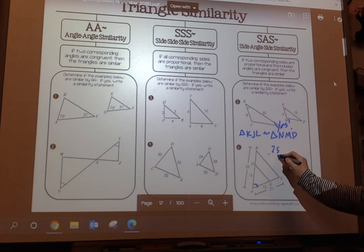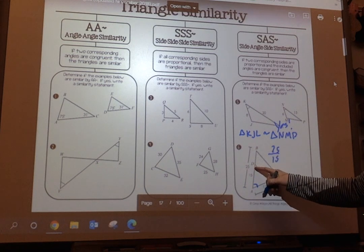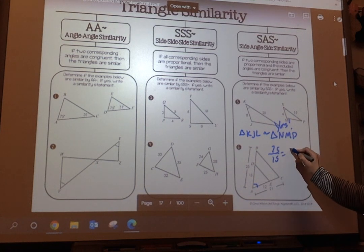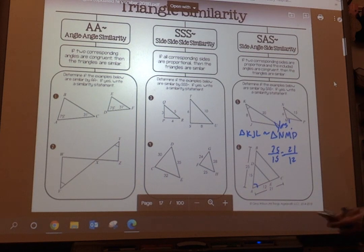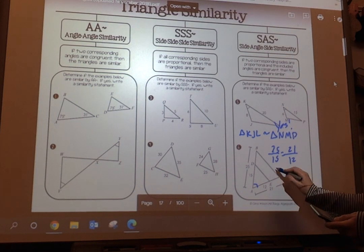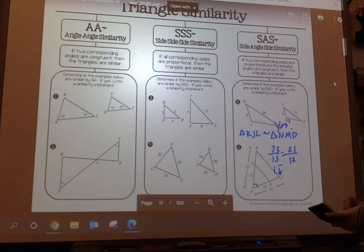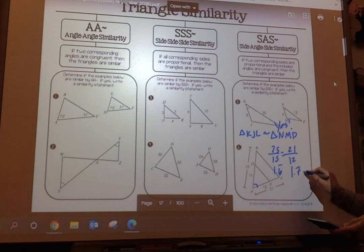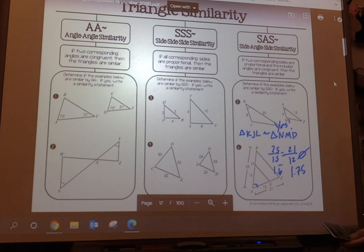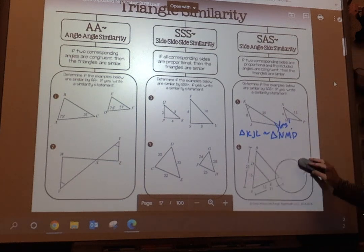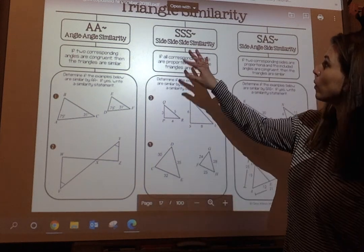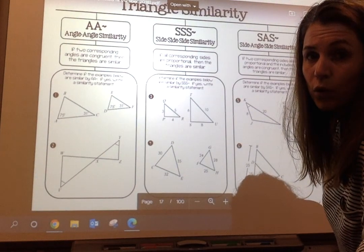Is 25 proportional to 15, large to small, and is 21 proportional to 12, large to small? So 25 divided by 15 is 1.6 repeating, and 21 divided by 12 is 1.75. These are not proportional, therefore I cannot make a similarity statement. So that's just in a real quick worksheet how all those triangle similarities work.